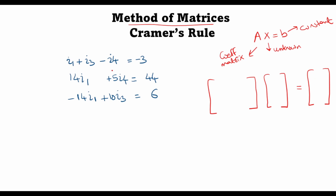Writing the equations in matrix form: the first row of the coefficient matrix has coefficients 1, 1, and minus 1 for unknowns I1, I3, and I4, with constant minus 3. The second row is 14, 0, 5 equal to 44. The third row is minus 14, 10, 0 equal to 6. This is the AX equals B form of the three equations.